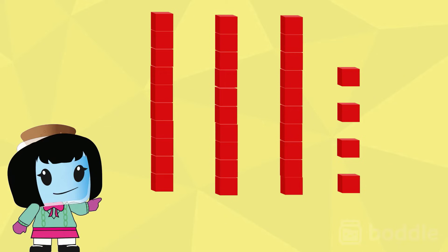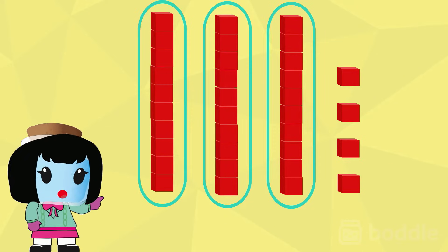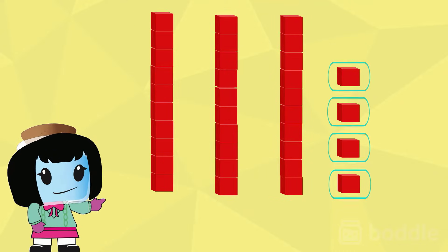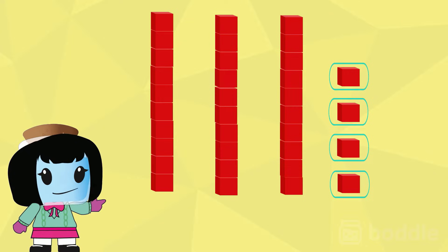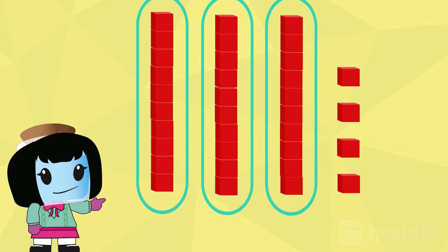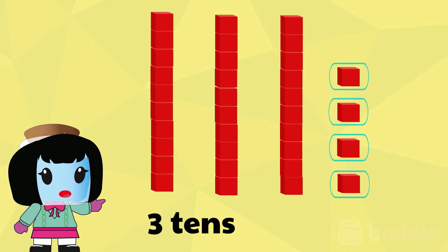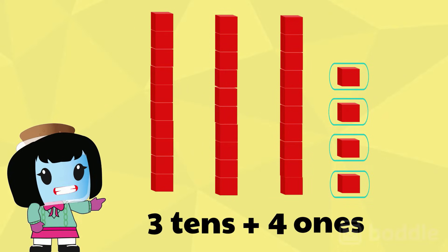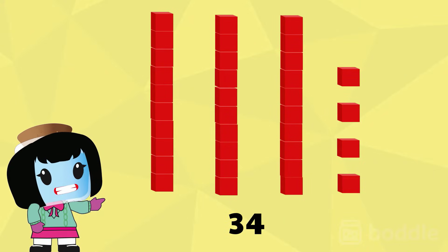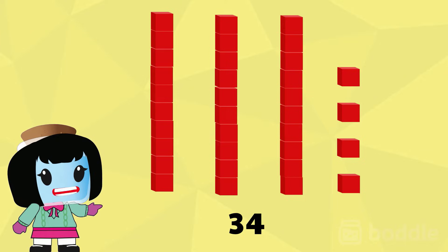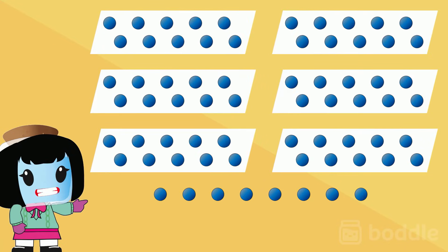Let's try another example by counting the blocks below. These first three stacks have 10 blocks each, and there are four blocks that are not stacked into groups of 10. We can say that the stacks are three tens and the separate blocks are four ones, which means we have 34 blocks in total.